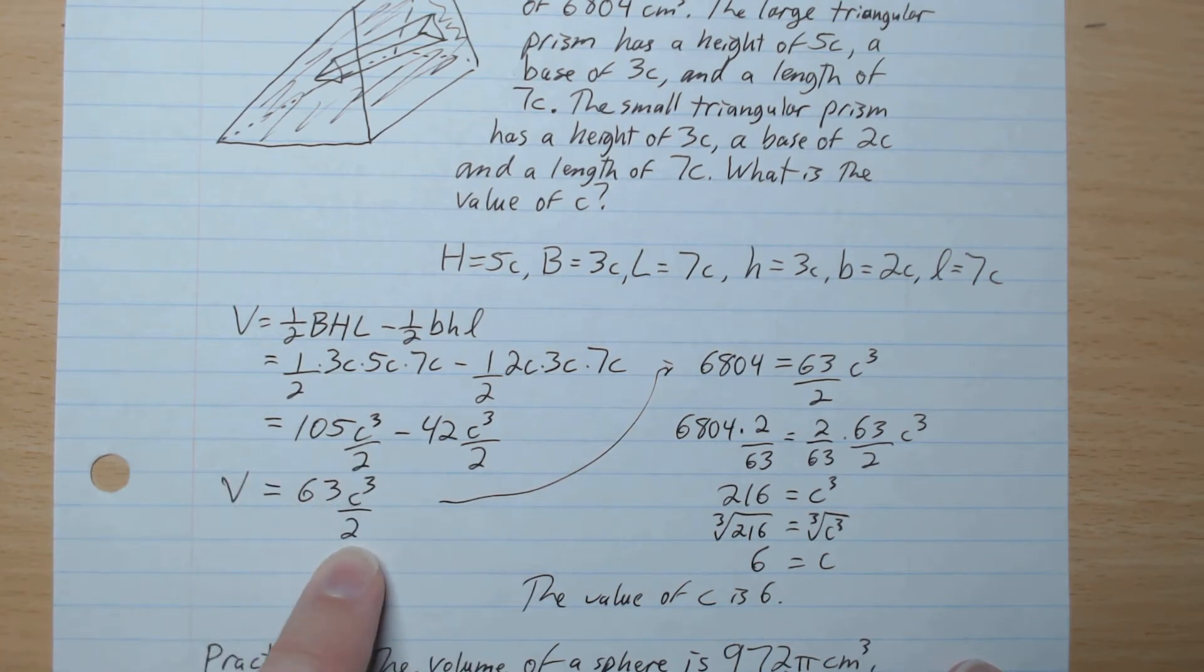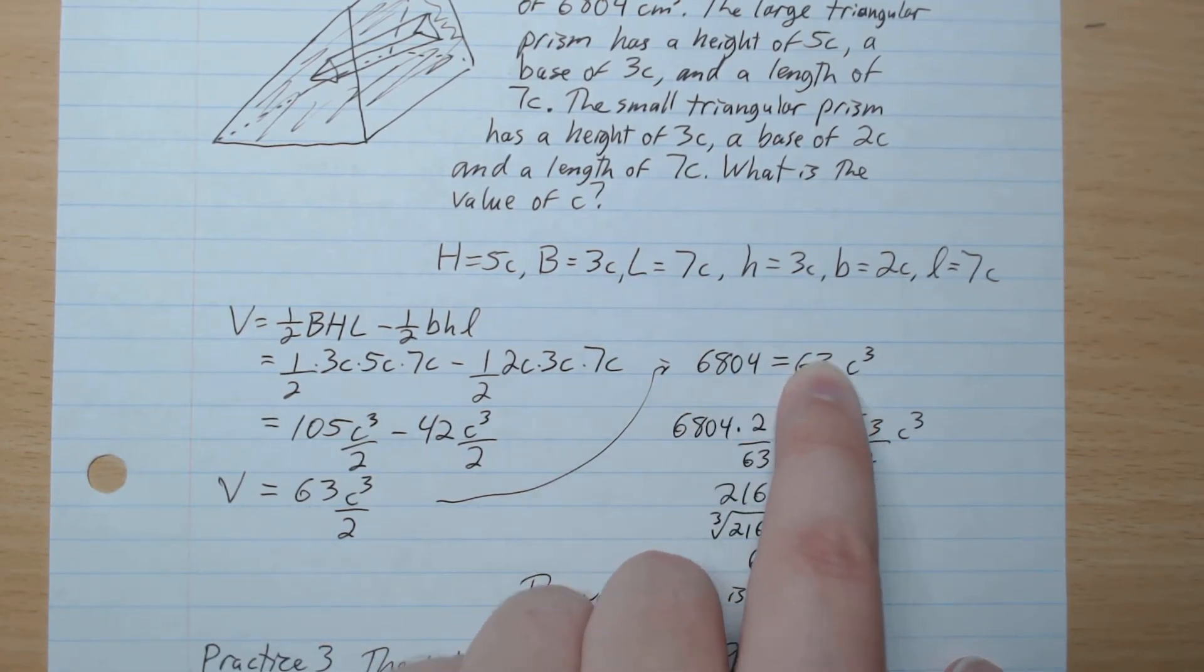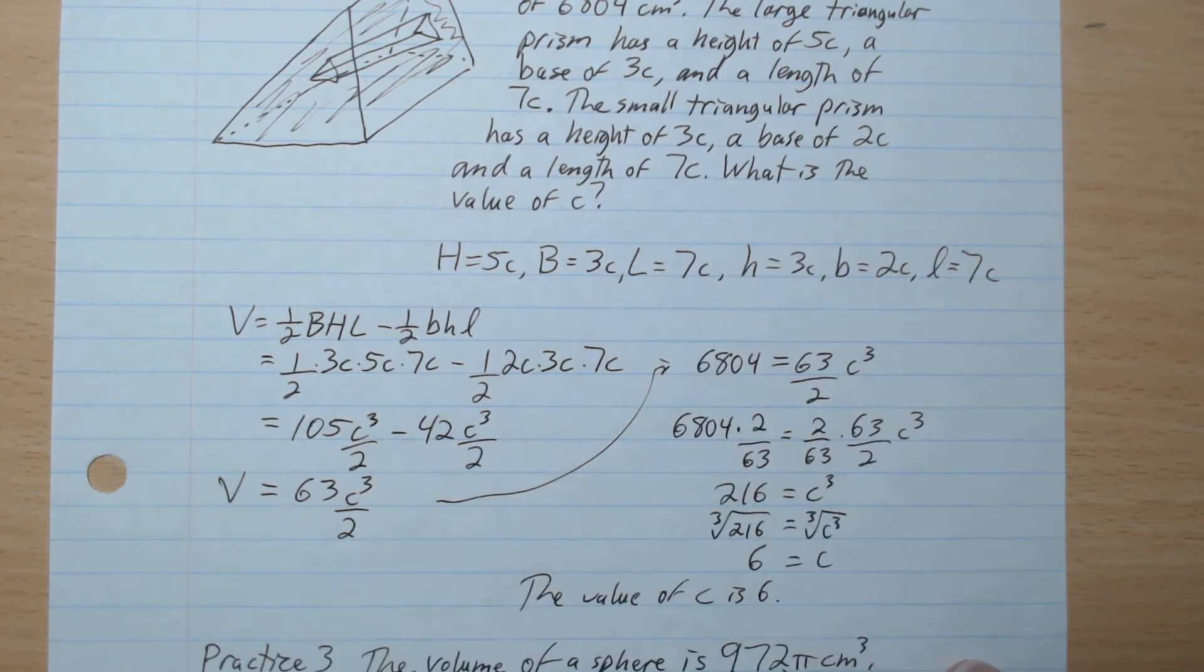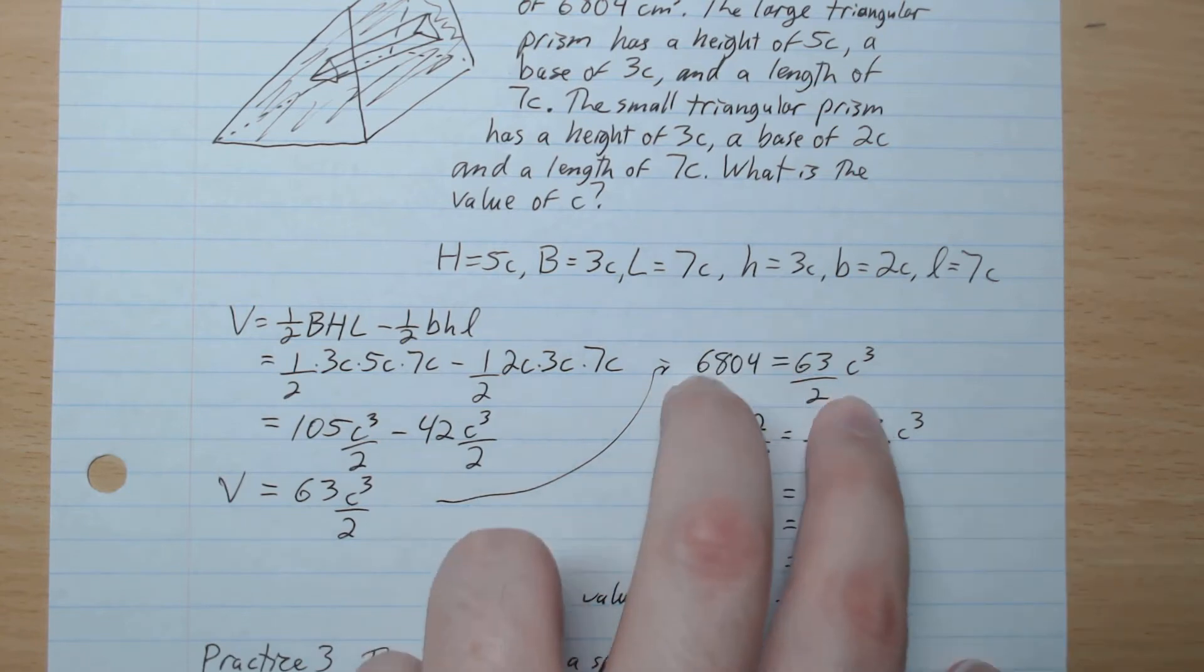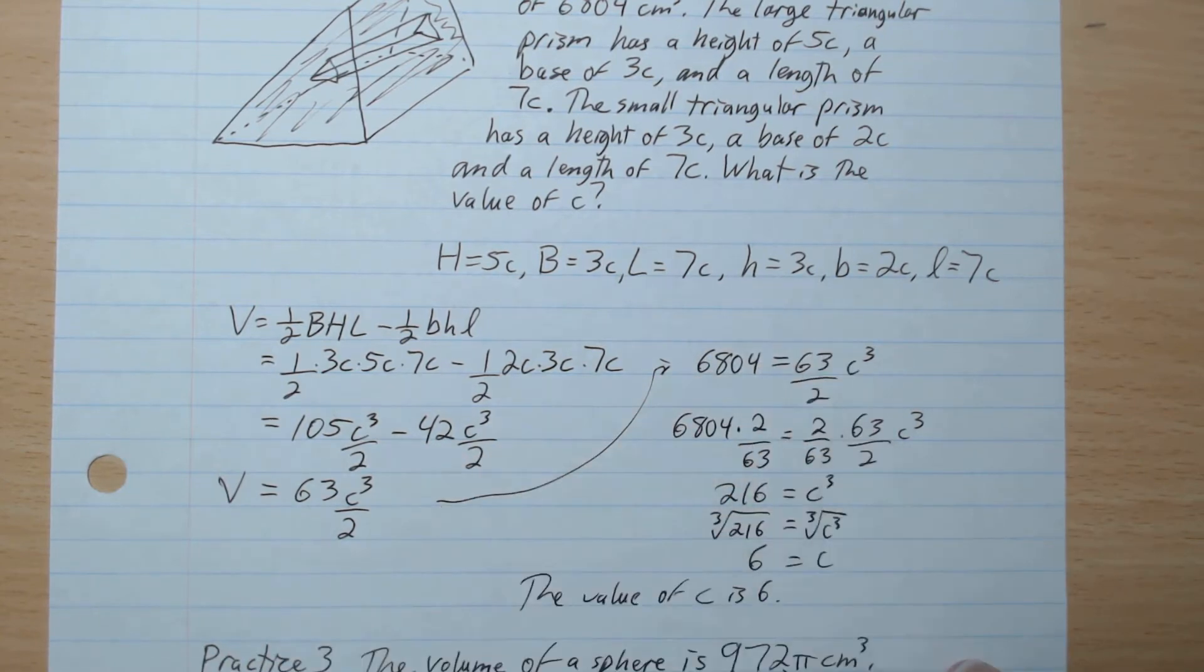which gives 63c³ over 2. We know the volume is 6804, so we plug that in. So 6804 equals 63 over 2c³. So we're going to go times 2 to both sides to get rid of the 2 and divide by 63 to both sides to get rid of the 63.